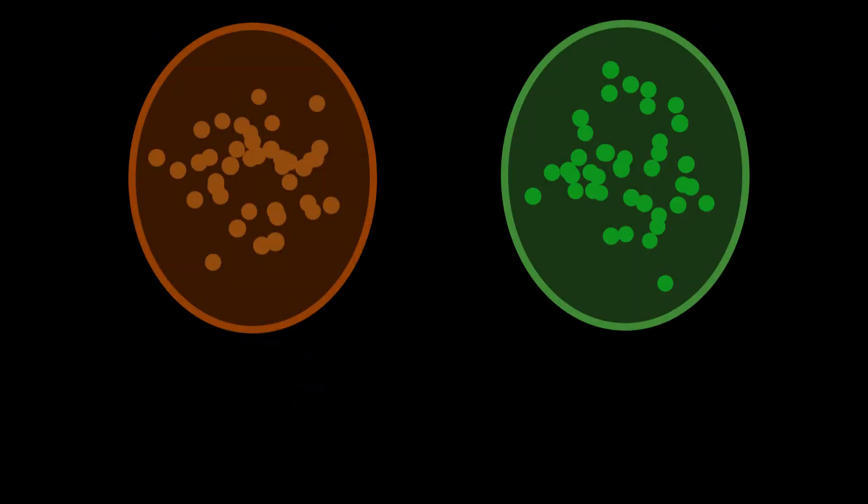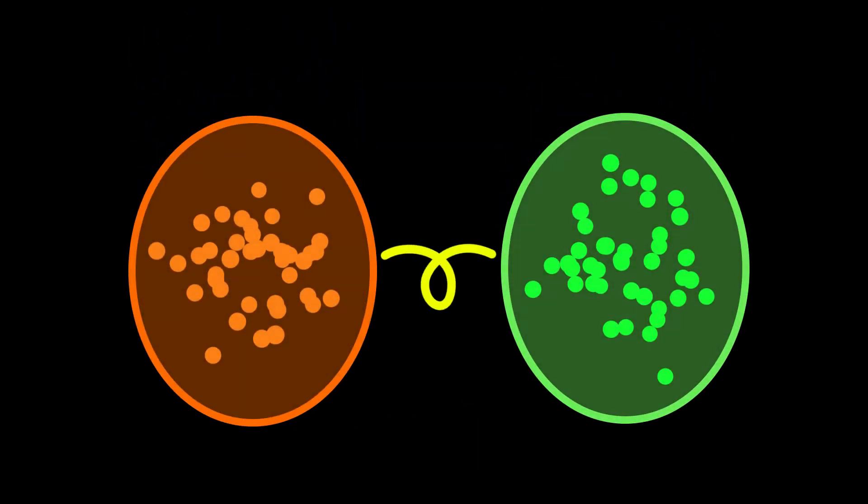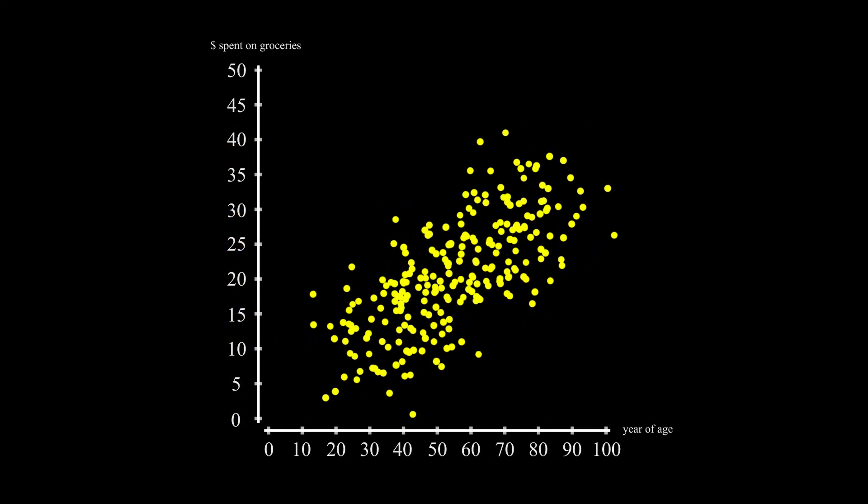The second figure we've got to introduce is covariance. Imagine now that you have two sets of data that are linked. For instance, the age of a person and the amount of money they spend on groceries. Well, you can plot your data on a 2D graph, where the x-axis is the age of the person and the y-axis is the grocery money.